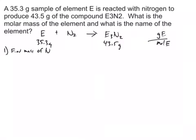So let's go ahead and do that. We're going to take the 43.5 grams of E3N2, and we're going to subtract 35.3 grams of just E, and that gives us 8.2 grams of nitrogen. So that's the first thing we did.